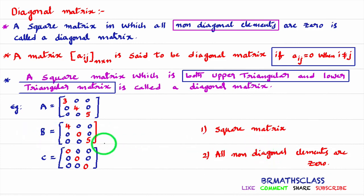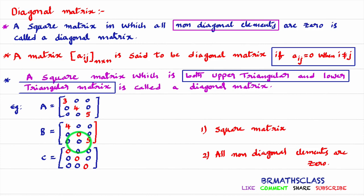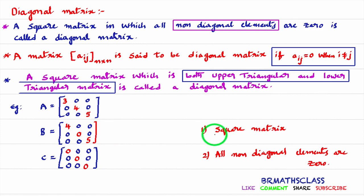Observe this matrix B. Is it a square matrix? Yes — number of rows equals number of columns, so this is a square matrix. Second point: are all non-diagonal elements 0? Observe the non-diagonal elements — they are all 0. The matrix satisfies both conditions, so this is a diagonal matrix. They are not saying anything about the diagonal elements; they are saying that non-diagonal elements are 0. So matrix B is a diagonal matrix: first, it is a square matrix; second, all non-diagonal elements are 0.